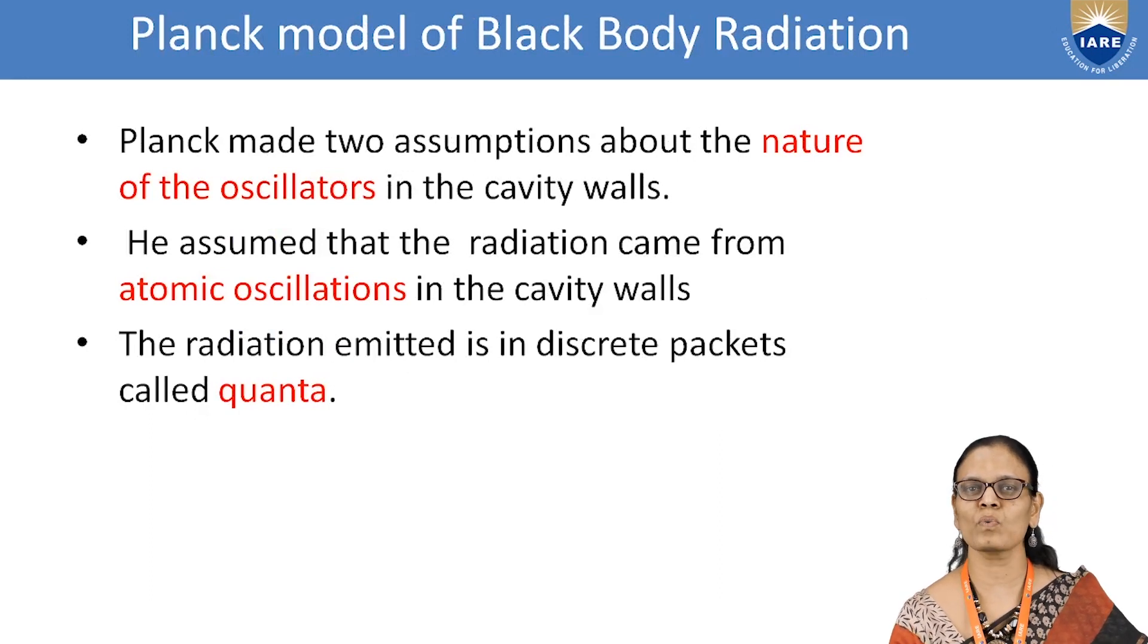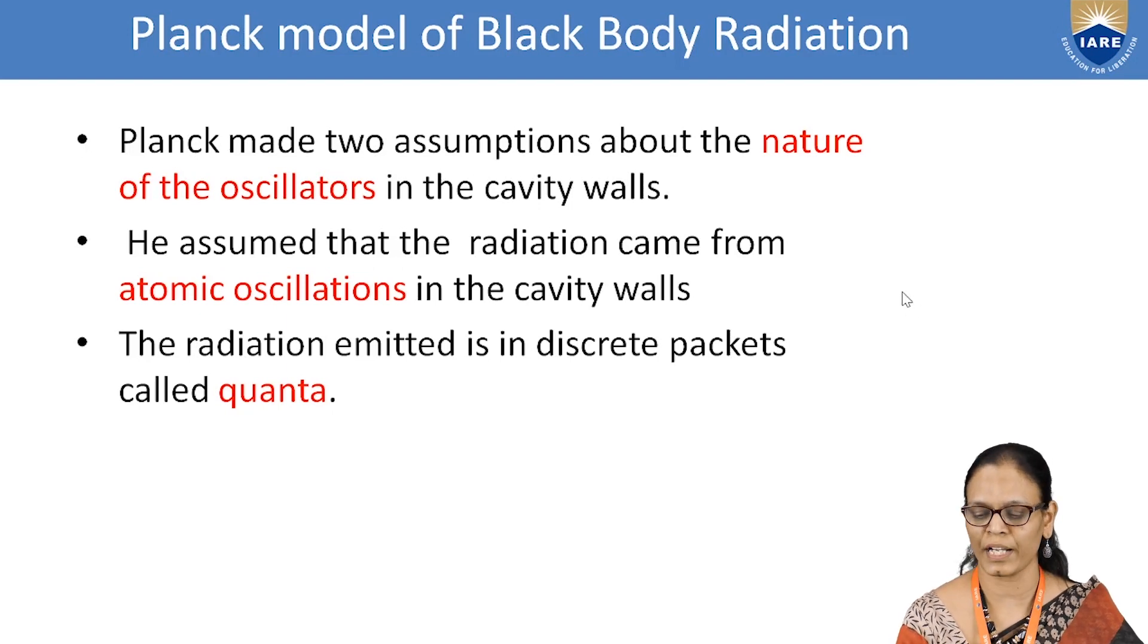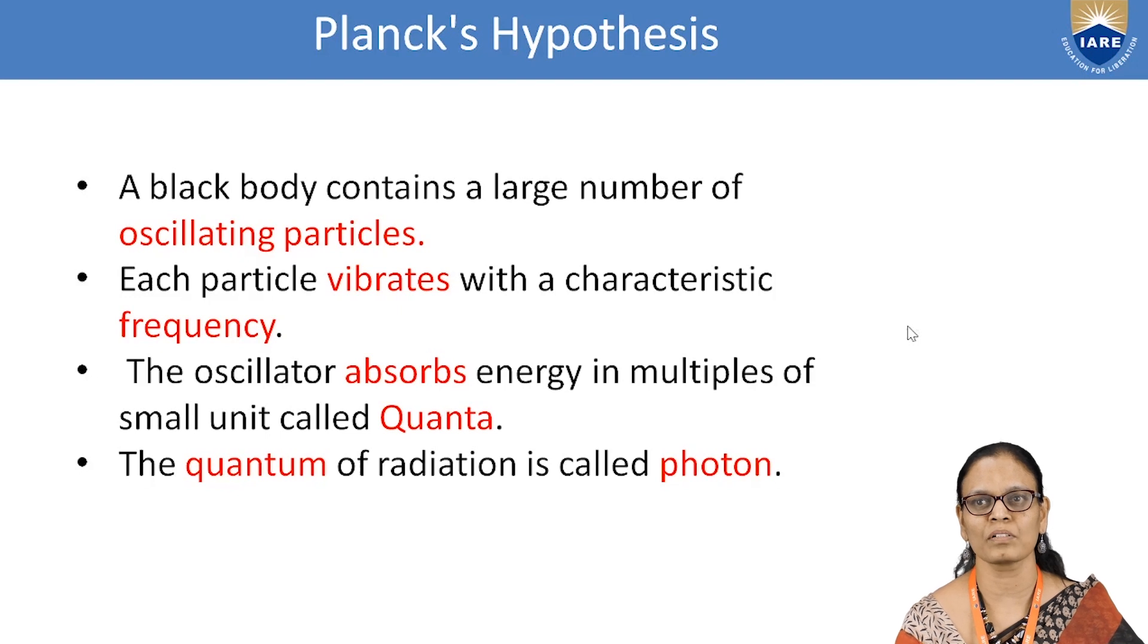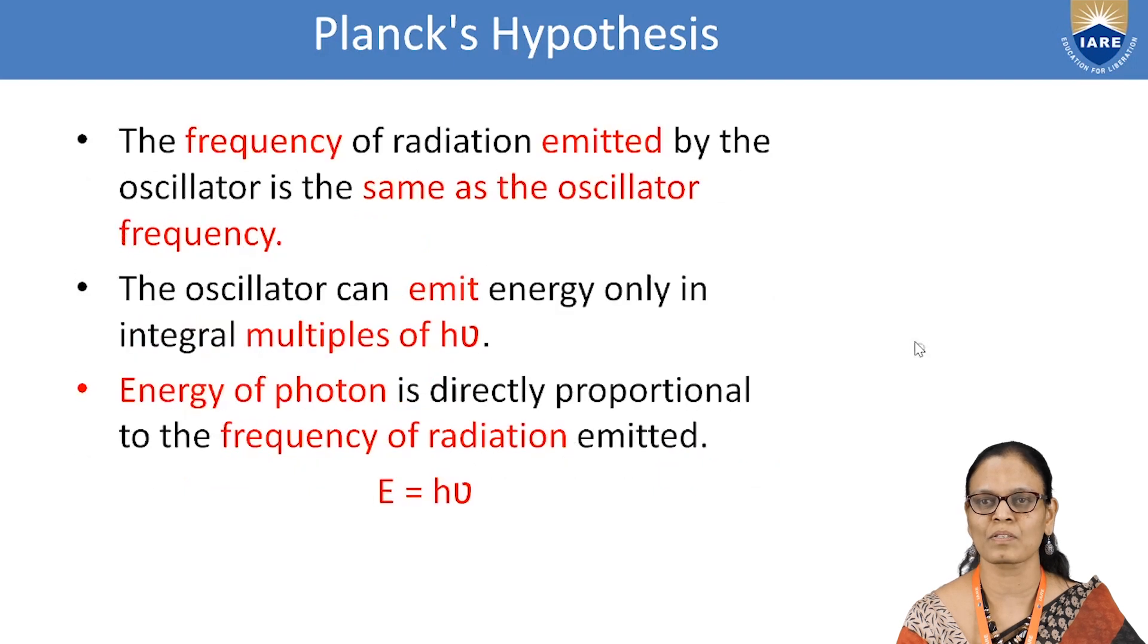Planck made two important assumptions to explain the black body radiation. He assumed that the radiation came from the atomic oscillations of the walls of the cavity. Then the radiation is emitted in discrete packets called quanta. And the oscillator absorbs energy in multiples of quanta. And the energy of each photon is given by E is equal to h nu. Where E is the energy that is incident, and h is the Planck's constant, and nu is the frequency of the radiation that is incident.